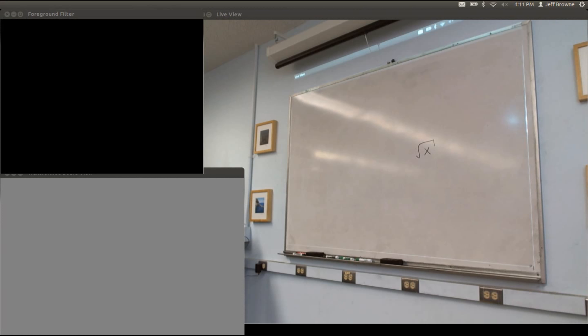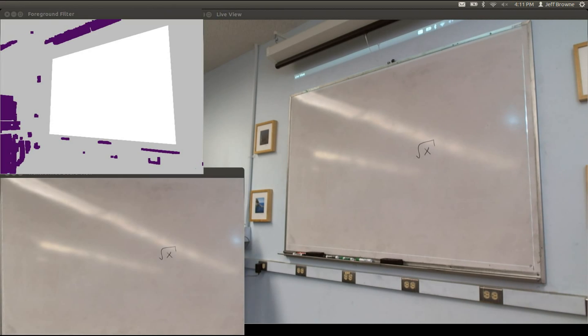Once the camera is pointed at a whiteboard, the first step of the system is to initialize a model of the drawing surface. Here, someone has already written the equation square root of x on the board before Spark is told to begin capturing. We can see that the system has digitized and recognized the existing marks by the typeset equation that the projector displays nearby.